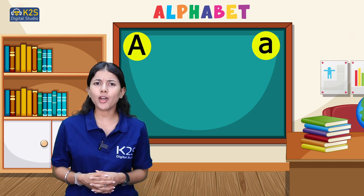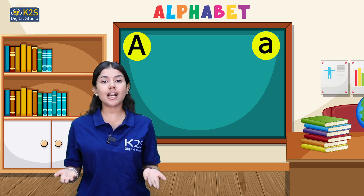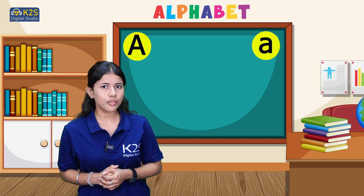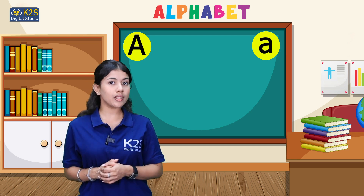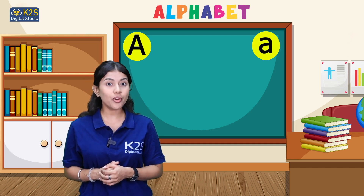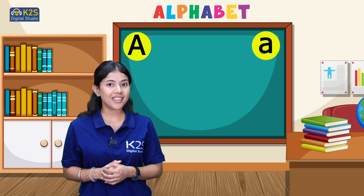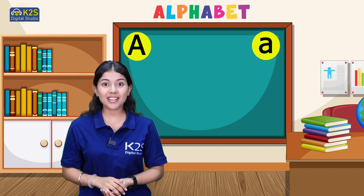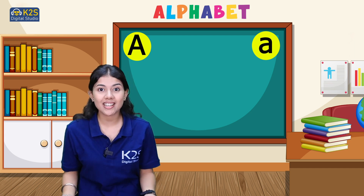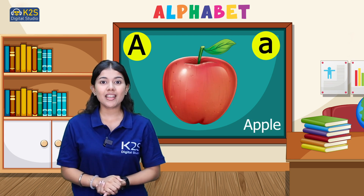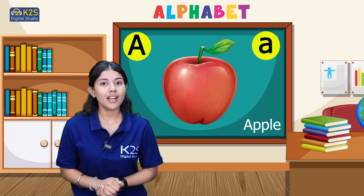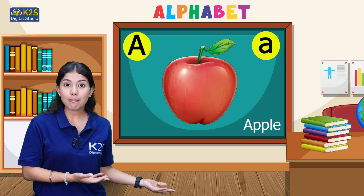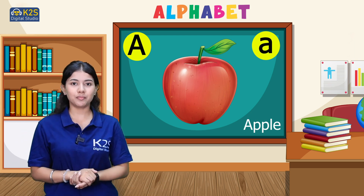Now we will talk about some words which start with letter A. Do you know a fruit which starts with letter A? Think... Correct! It's apple. A for apple. Apple starts with letter A.